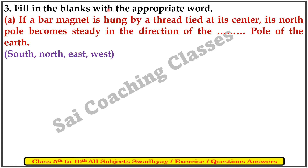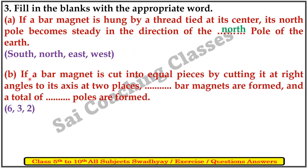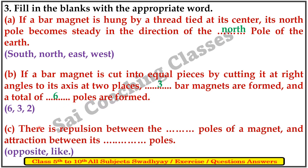Question 3. Fill in the blanks with the appropriate words. A. If a bar magnet is hung by a thread at the center, its north pole becomes steady in the direction of the geographic north pole of the earth. Answer: north. B. If a bar magnet is cut into equal pieces by cutting at right angles to its axis at two places, three bar magnets are found and a total of six poles are found. Answer: three and six. C. There is repulsion between the like poles of the magnet and attraction between its opposite poles. Answer: like and opposites.